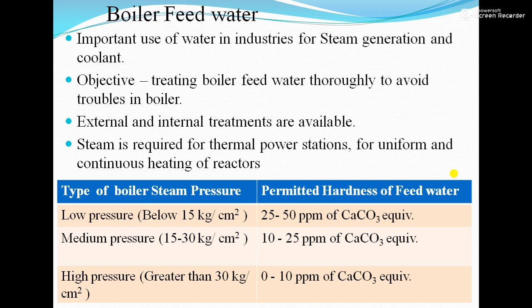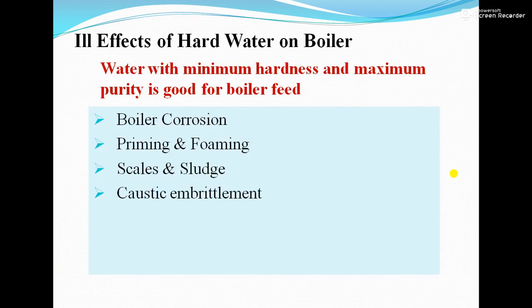If we use water which has hardness above 50 ppm or 100 ppm, then using hard water in the boiler causes bad effects on the boiler metals, such as boiler corrosion, priming and foaming, scale and sludge formation, and caustic embrittlement. Water with minimum hardness and maximum purity is good for boiler feed.